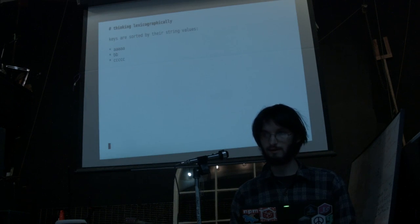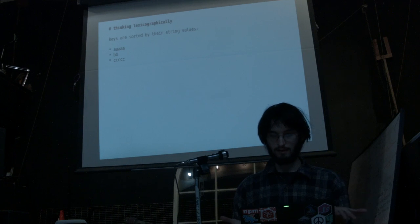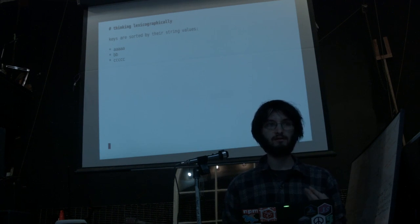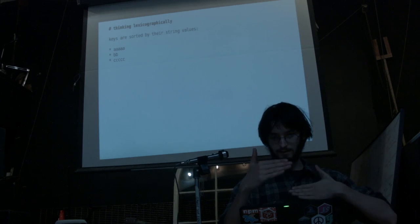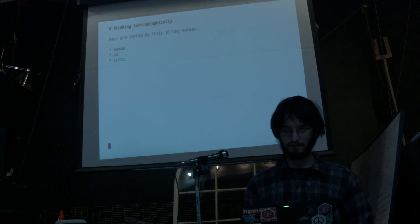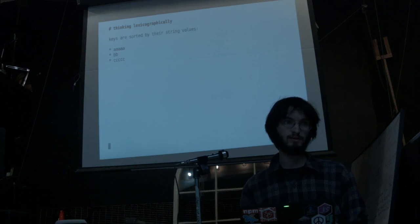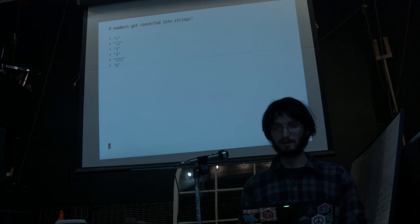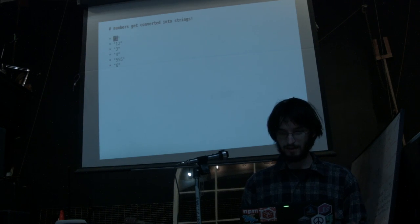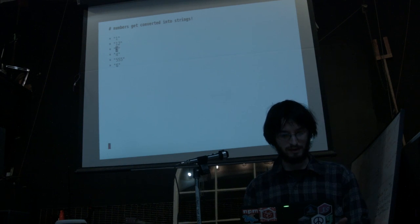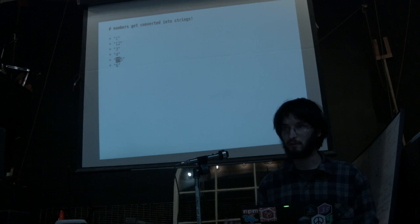Now we can start tackling how this key design works. When you use LevelDB, you really have to think about how your data will be sorted, because that's what LevelDB is very good at — taking string keys and putting them in order. This is simple if you have string keys. But if you have numbers or dates, it can be a little complicated. Numbers have to be represented as strings in the database. But 1 will come first, then 12 comes before 3 because '1' is less than '3', and 555 comes before 6 because '5' is less than '6'. This is not what we want.